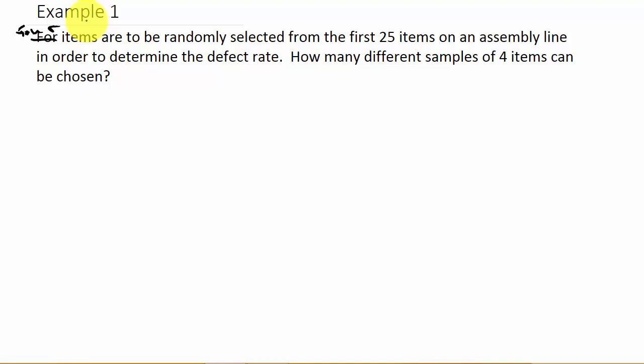So four items are to be randomly selected from the first 25 items on an assembly line to determine if they're defective or not. How many different samples of four items can be chosen? All right, so this is a combination, and let me show you why.